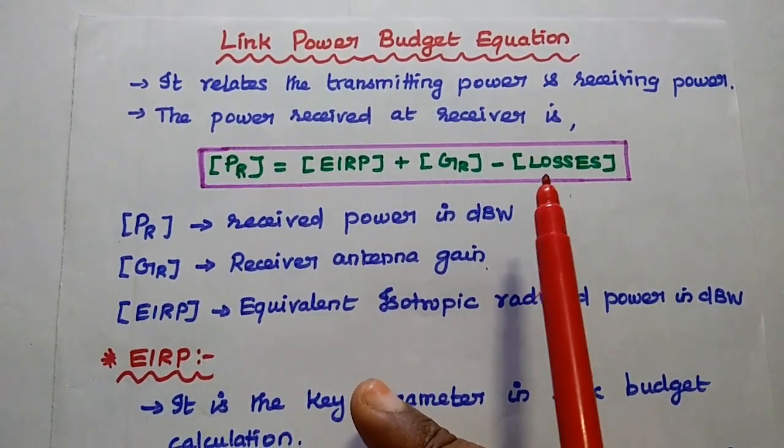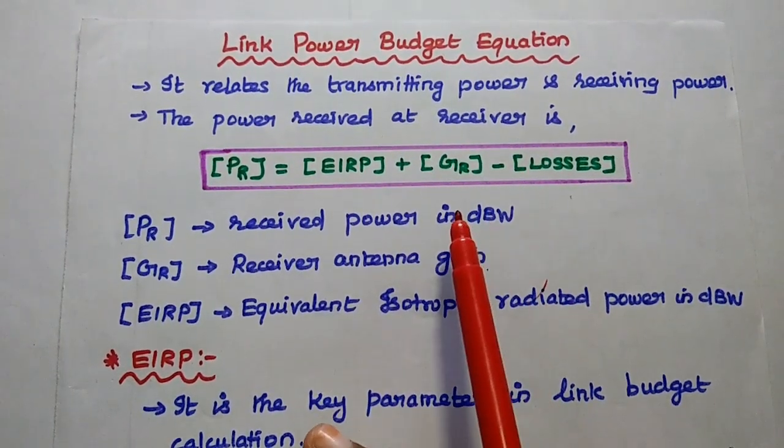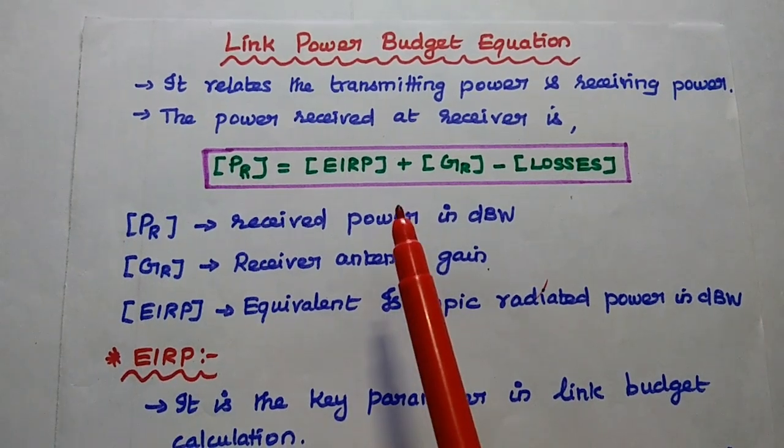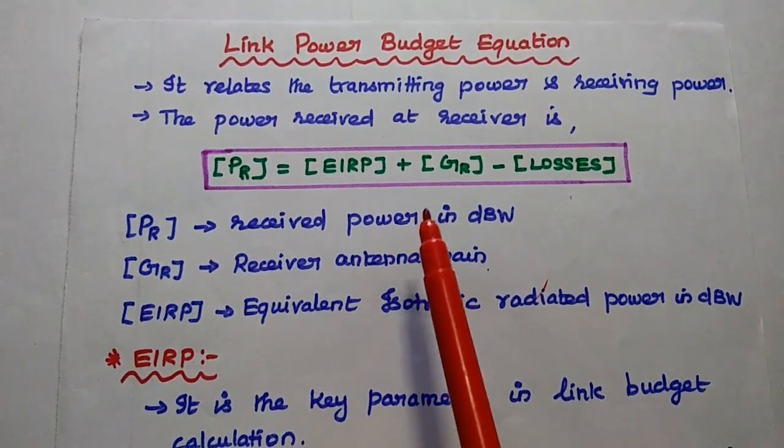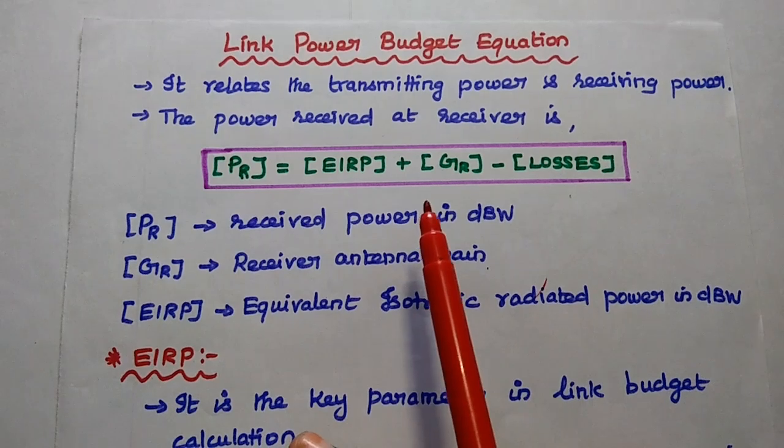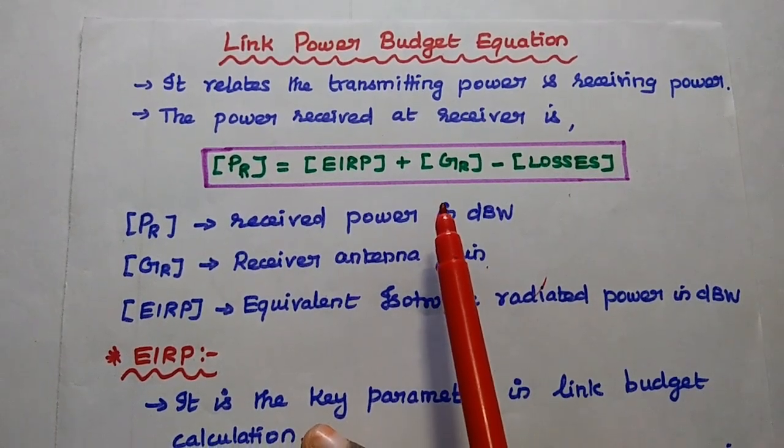Here the losses should always be subtracted from the transmitted power to get the proper received power. This is called the link power budget equation.